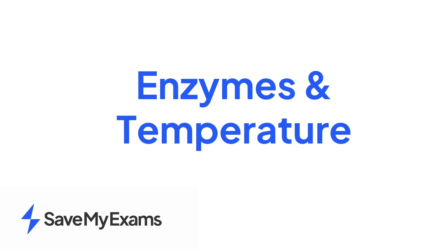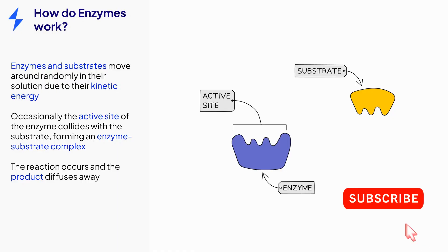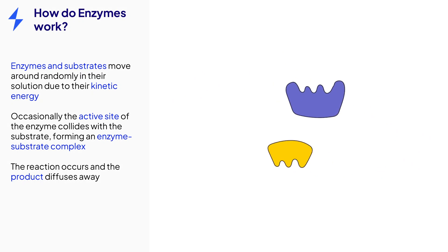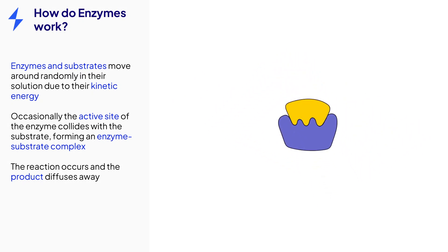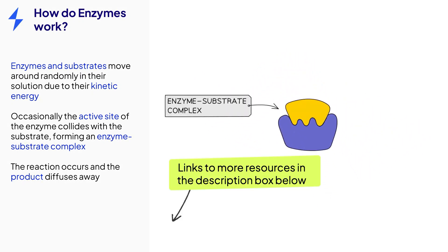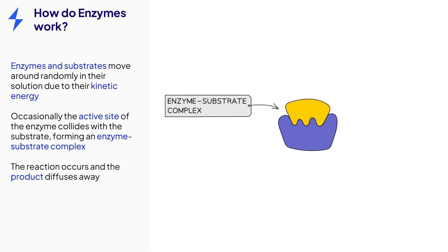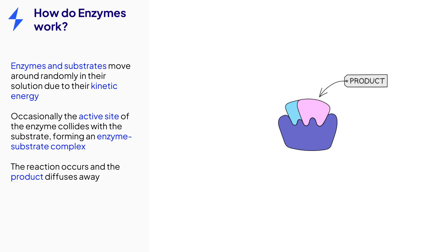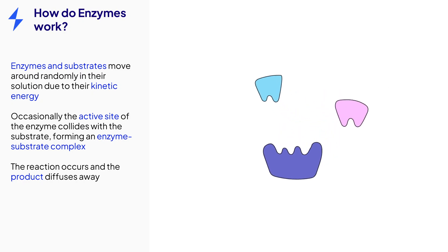This video is on the topic of enzymes and temperature and will cover the effect of temperature change on enzyme activity. Enzymes are affected by changes in temperature. Enzymes and substrate molecules move around randomly in their solution due to their kinetic energy. Sometimes they randomly collide, causing the active site of the enzyme and the substrate to join together and forming an enzyme-substrate complex. This is when the reaction occurs and the product is formed. The product detaches and diffuses away.